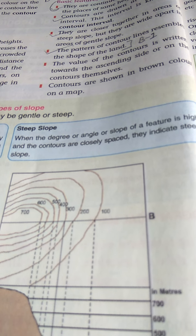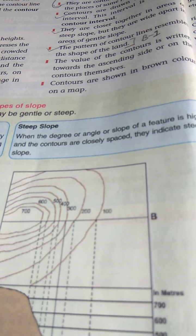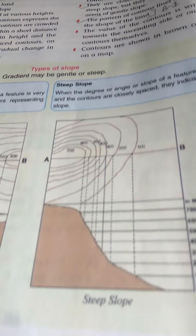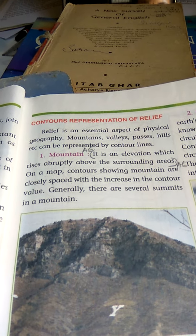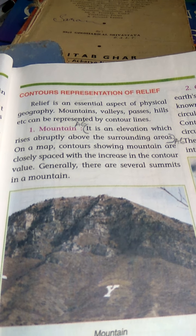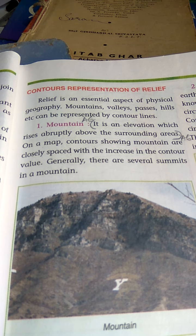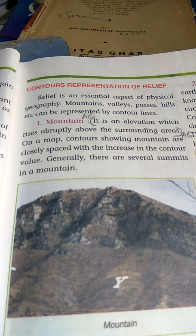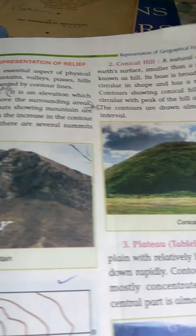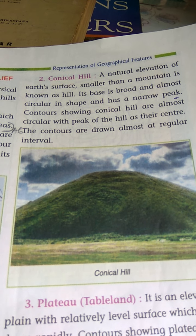Next one is mountain. It is an elevation which rises abruptly above the surrounding area. On a map, contours showing a mountain are closely spaced with an increase in the contour value. That is the diagram. Next one is conical hill — a natural elevation of the earth's surface smaller than a mountain is known as a hill.